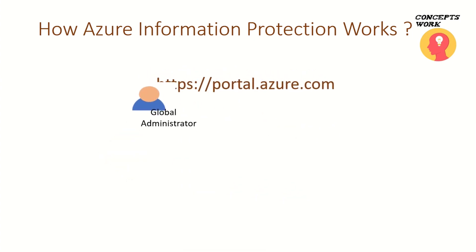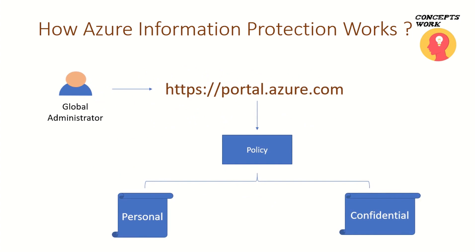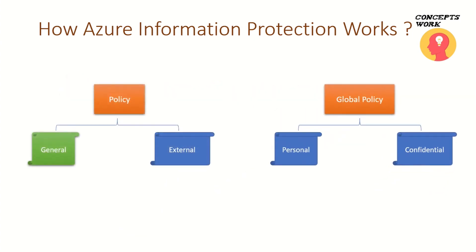Think about a scenario where you are signed in as global admin to portal.azure.com and you have activated Azure Information Protection or assigned an AIP license to a user. The moment you access the AIP console for the very first time, there will be a policy created out of the box. Since this policy is available to all users, it is termed the global policy. You can also create a custom policy and assign it to different sets of users. Since that new policy is scoped to a specific group or set of users, these are called scoped policies.